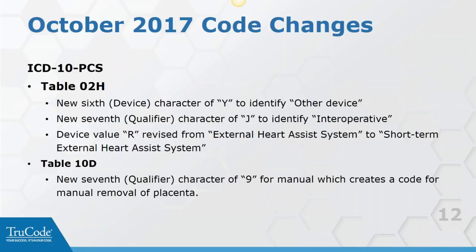In PCS, we have a couple of changes. When a change is made, it can be across multiple tables and impact multiple codes - that's why it looks exponential. A new sixth character device value of Y was added to identify 'other device,' with an example in table O2H. In that same table, we have a new seventh character qualifier J to identify intraoperative, and a device value R that revised 'external heart assist' to 'short-term external heart assist.' So they've given us a way to identify intraoperative balloon assist, which previously had coders disagreeing on how to code it.